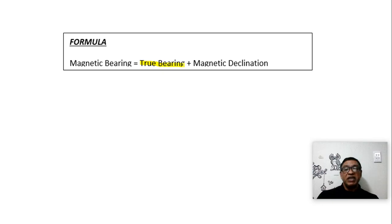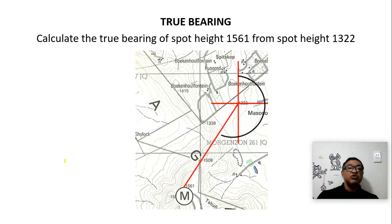First, we'll have to calculate the true bearing. Secondly, we'll have to calculate the current magnetic declination. And then we add the two to get the magnetic bearing.